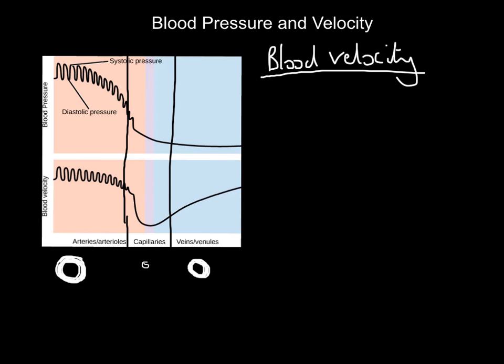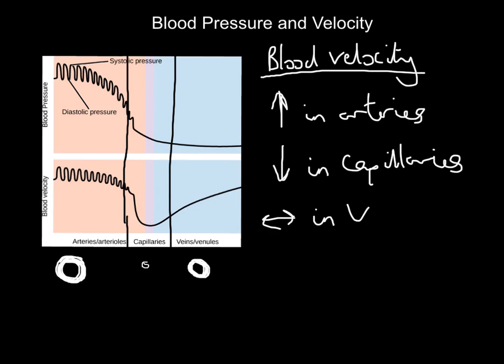So what are we saying? We are saying blood velocity is highest in arteries, it is slowest in capillaries, and it is medium in veins. That is basically what we are saying.